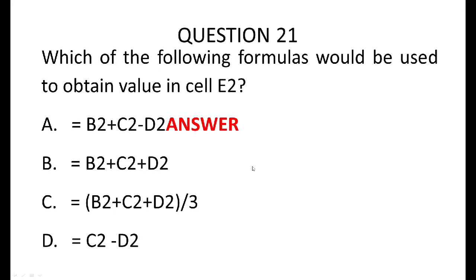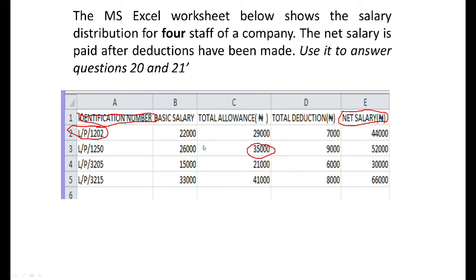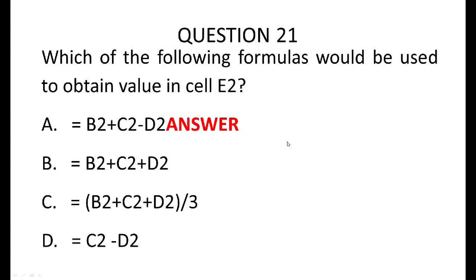Now let's move to question number 21: which of the following formulas would be used to obtain the value in E2, in terms of B2 plus C2 minus D2? B2 plus C2 minus D2 will give us the answer in E2. Looking at the table: B2 is 22,000, C2 is 29,000, and D2 is 7,000. So 22,000 plus 29,000 gives 51,000, minus 7,000 gives 44,000. So option A, which is =B2+C2−D2, is the correct answer.